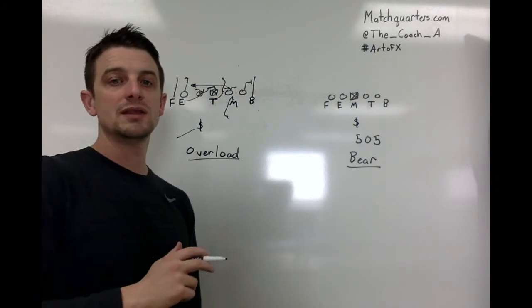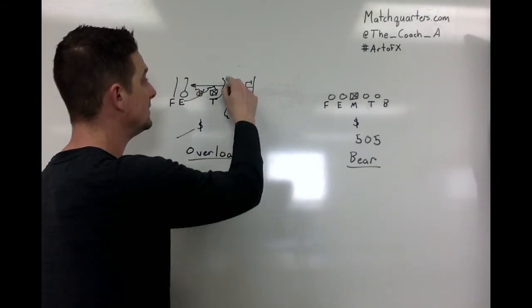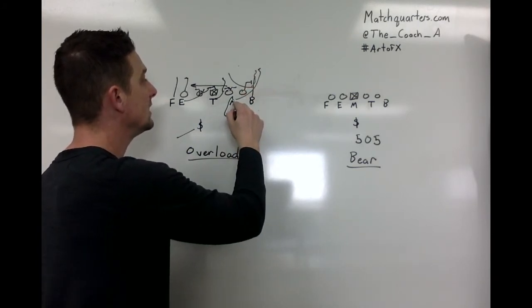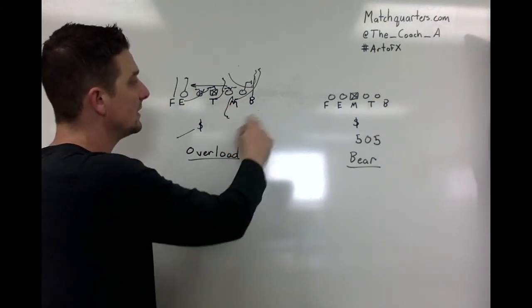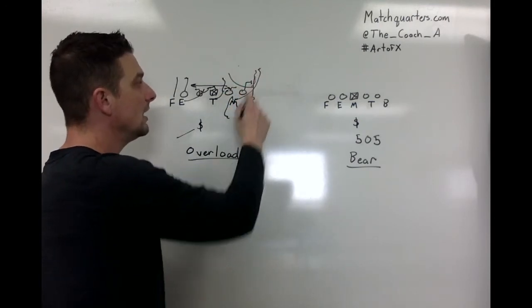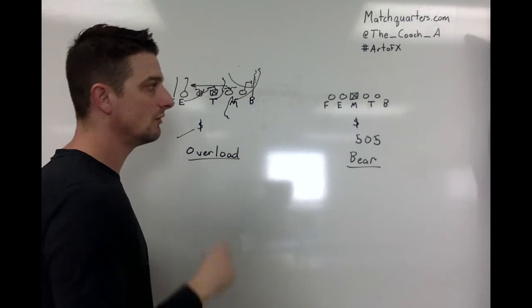Some things you can do off of this is give the freedom of one guy or the other that if he dips around, then now he comes outside. If he stays outside, he can just sit there in the window. So you give that kind of a freedom call. You can up and under, and then if he goes underneath, he just squats in that B gap. So that's your overload front.